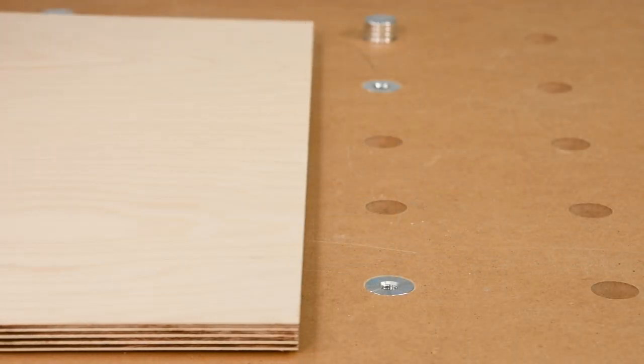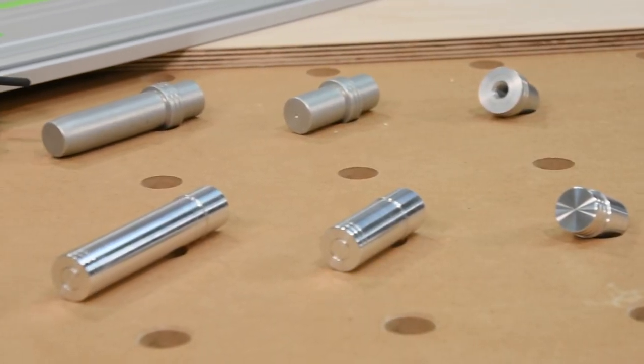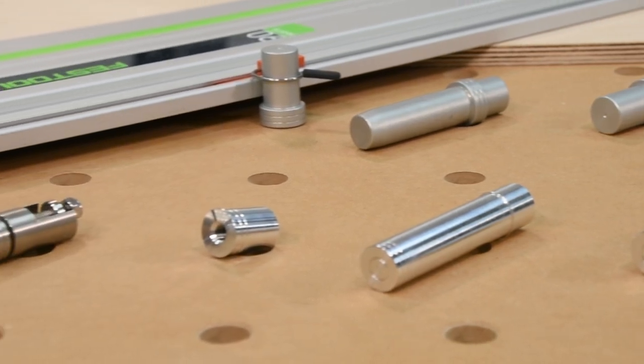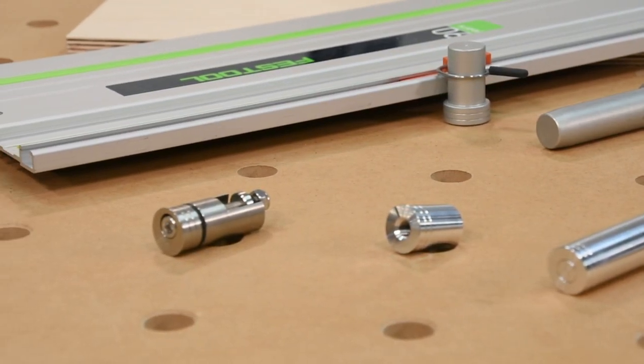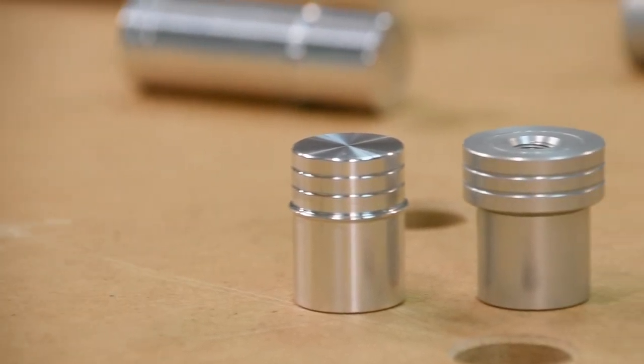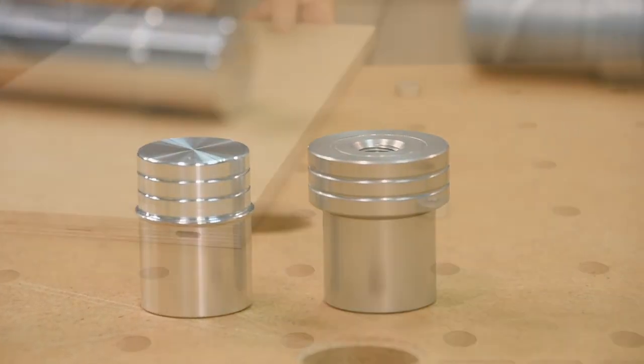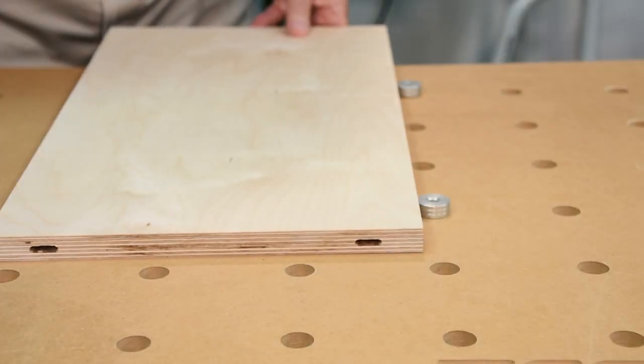You'll appreciate the availability of the chamfered collar dogs in a standard body and close-fit body version. Which one is right for a particular application? You would choose the standard dog for immobilizing a workpiece only.